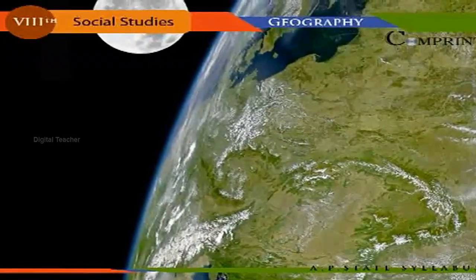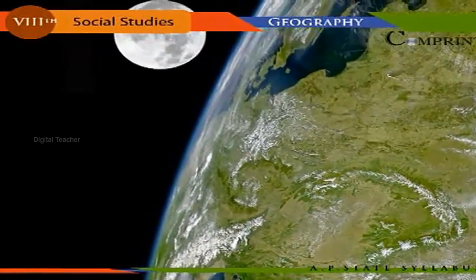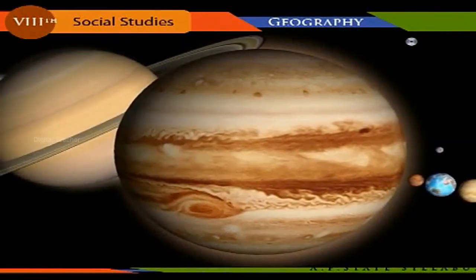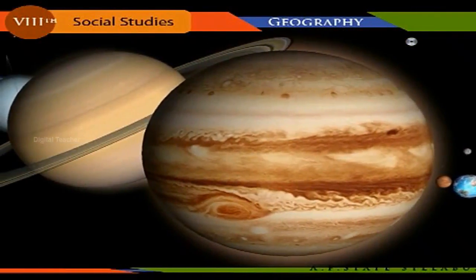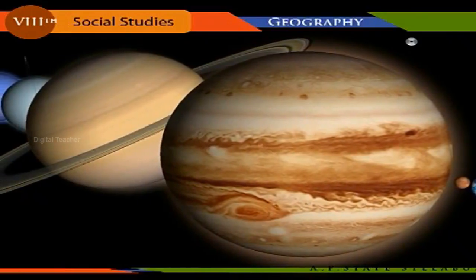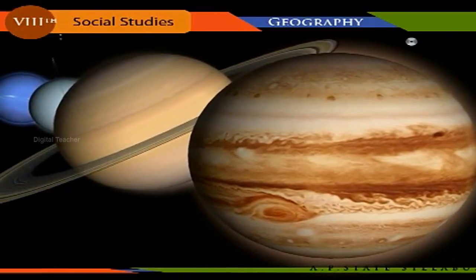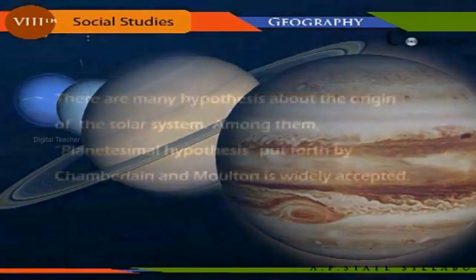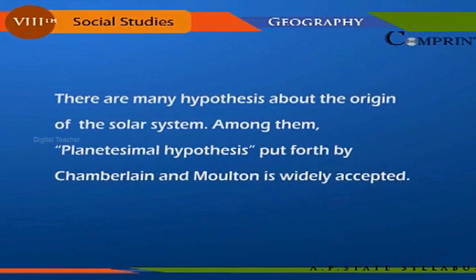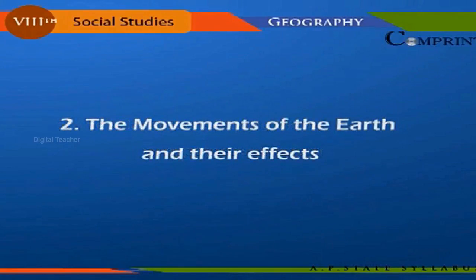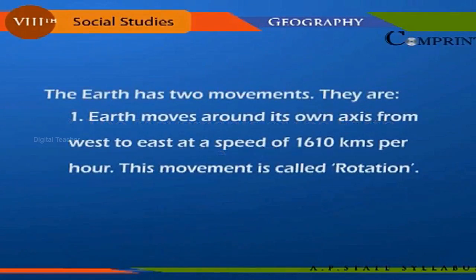The Moon is the satellite of the earth. Jupiter is the biggest of all the planets, followed by Saturn. The earth is the fifth biggest, and Pluto is the smallest planet. There are many hypotheses about the origin of the solar system; among them, the planetesimal hypothesis put forth by Chamberlin and Moulton is widely accepted.